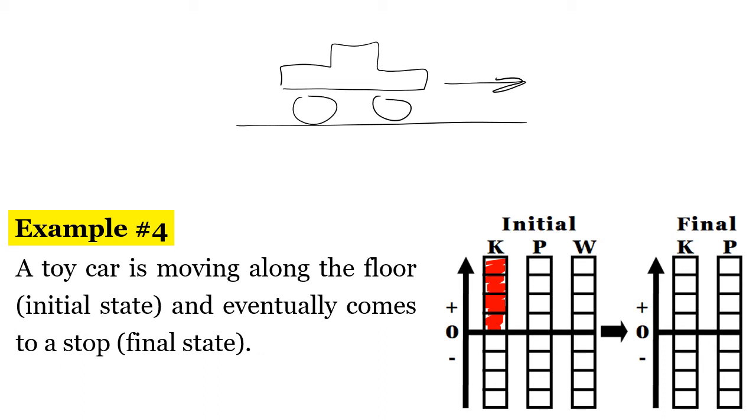So if you think back to our forces unit, there are tiny little imperfections in the ground and there are tiny little imperfections in the wheels here. And when those rub together we get a force called friction. Friction opposes motion. So when we're trying to move forward that friction is making it hard for us to move forward or it's making it more difficult.